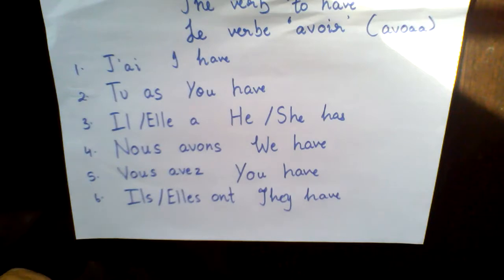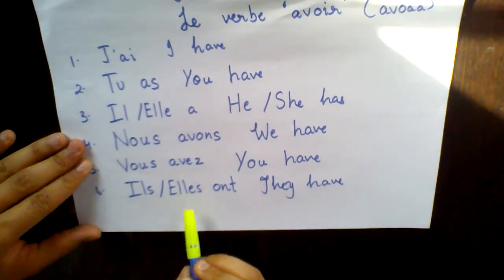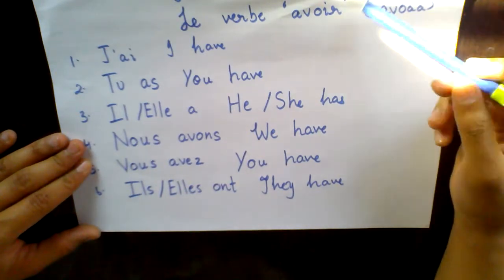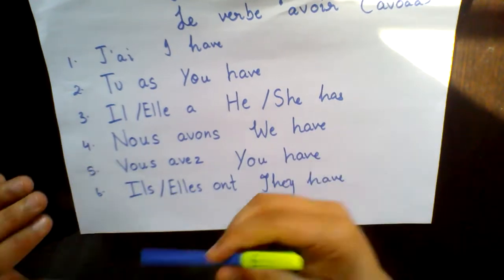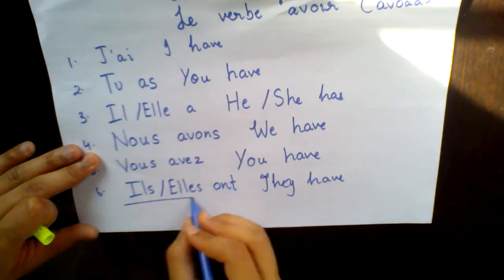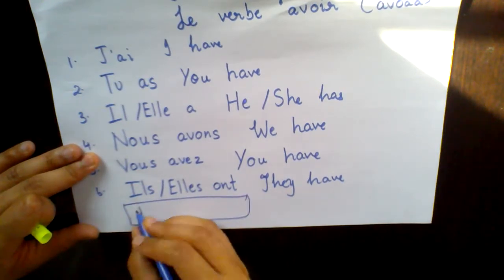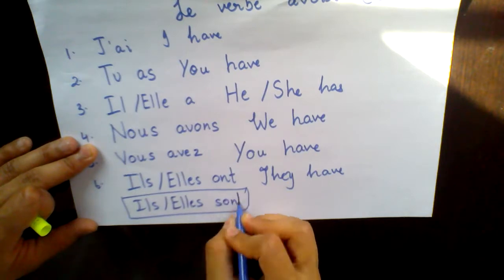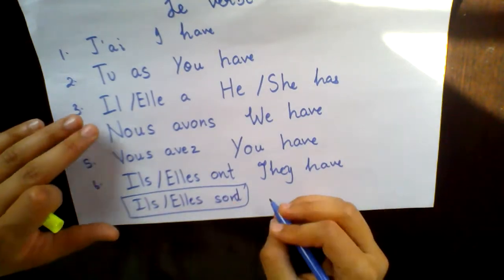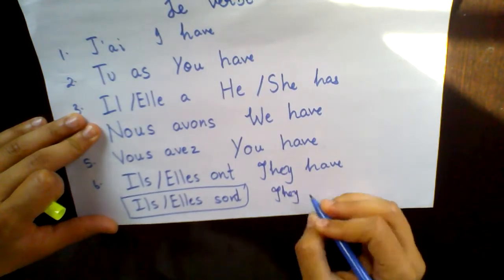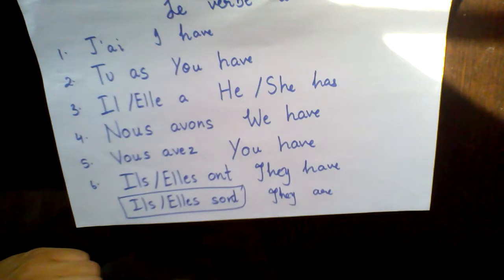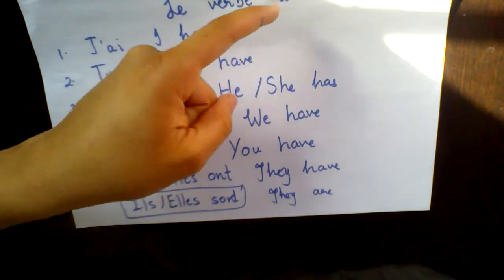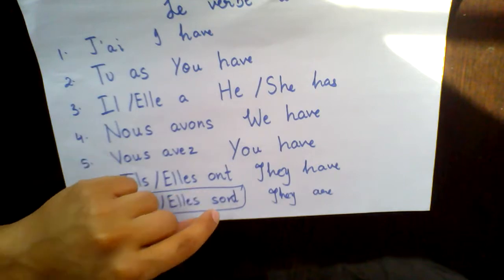The sixth word is ils/elles ont, which means 'they have'. As I mentioned in the previous lecture, elles is used when you have more females than males. When we were conjugating the verb être, it was ils/elles sont — basically the same structure but with an S at the end, meaning 'they are'. So remember, for 'they have' you do not use the S at the end.